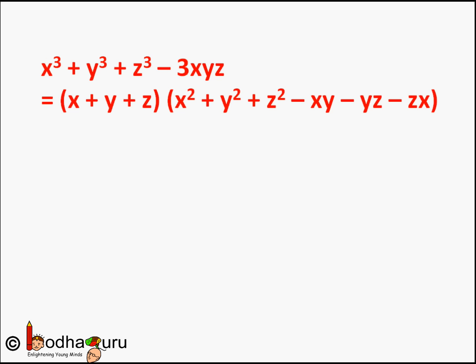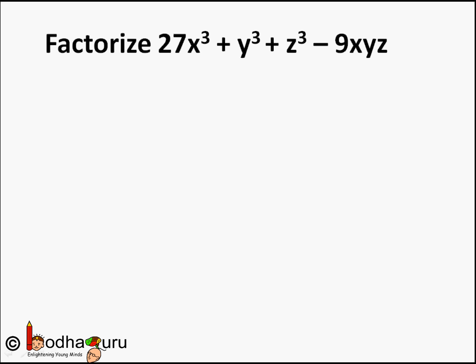Let us take an example. Find factors of 27x³ + y³ + z³ - 9xyz. It is a cubic polynomial, that is highest degree of three, so let us see which identity holds true here.